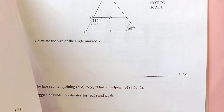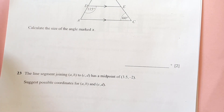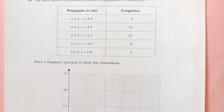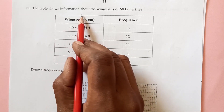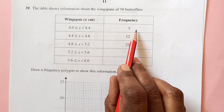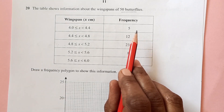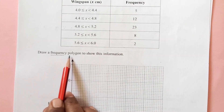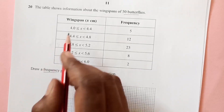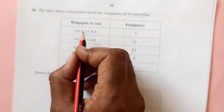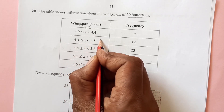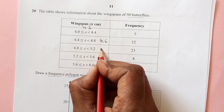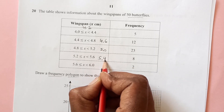Let's move to the next question. Actually, I think I missed question 20, so let's do number 20 first. The table shows information about the wingspan of 50 butterflies — this is the wingspan and this is the frequency. The question says: draw a frequency polygon to show this information. For the frequency polygon you need the midpoint of each class interval. The midpoints are 4.2, 4.6, 5.0, 5.4, and 5.8.